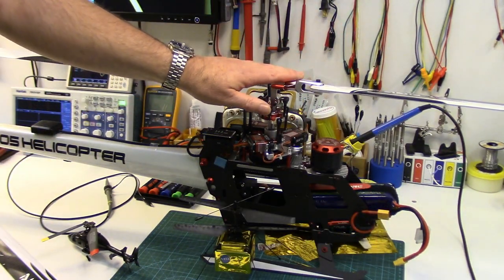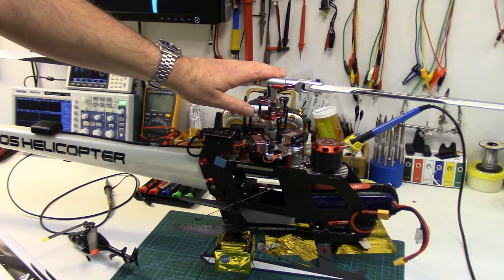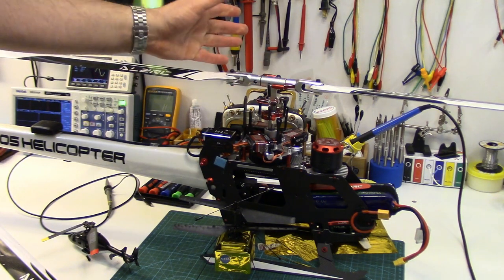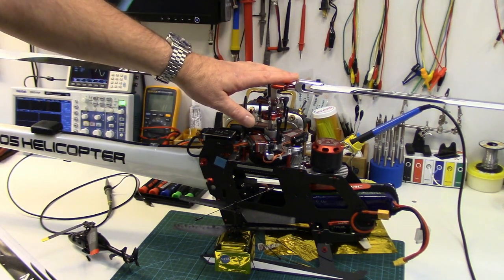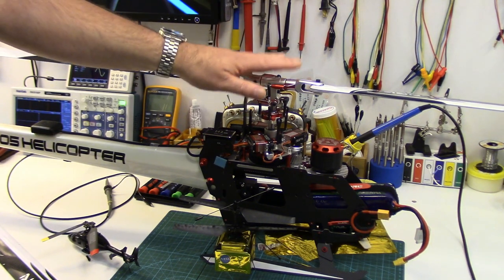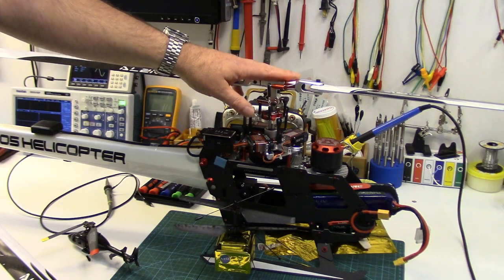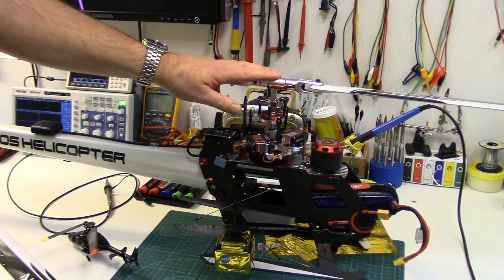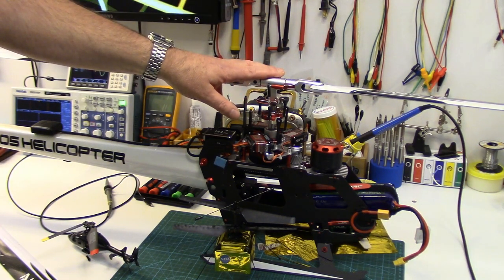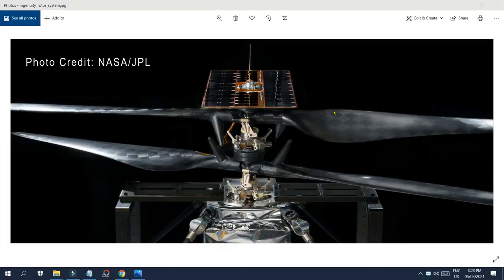The Ingenuity's rotor RPM is also very similar to what we would run on a standard collective pitch helicopter of similar rotor diameter. NASA and JPL state the Ingenuity's rotors will be spinning at around 2400 RPM, which is smack dab in the middle of the 2000 to 2800 RPM range I can run on this 500 size heli, which has a similar rotor diameter of about 1150 millimeters and roughly four feet. Of course the Ingenuity has two four foot diameter rotors spinning at that speed along with the high lift rotor blades to deal with that thin Martian atmosphere.